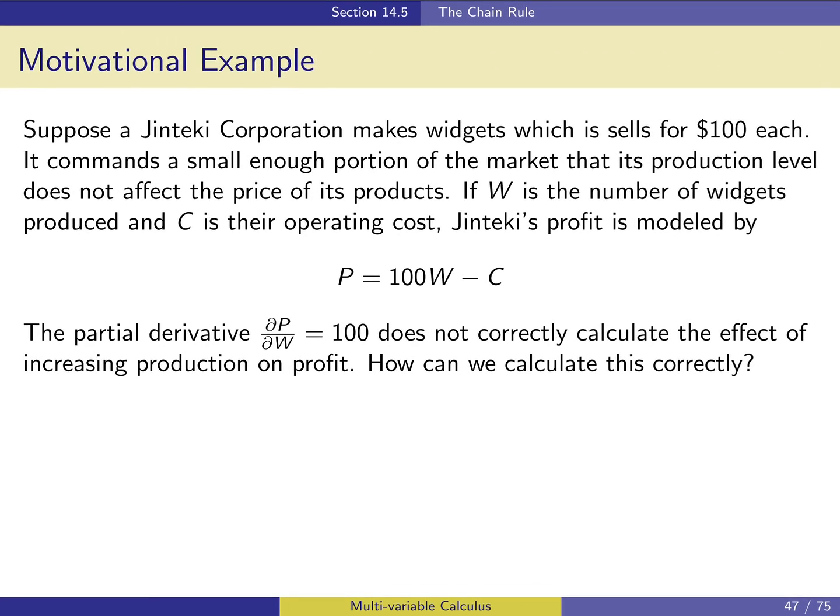Here's our motivational example, and this is something we've seen before. We're again going to assume that Jinteki Corporation makes widgets. It sells them for $100 each, and the price it is able to charge does not depend on how many it makes, so its revenue is always going to be 100 times the number of widgets it sells. But the partial derivative of p with respect to w, which is 100, does not correctly calculate the effect of increasing production on profit.